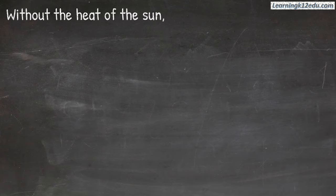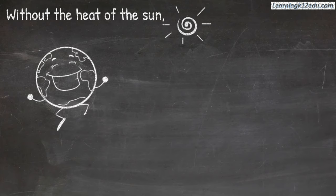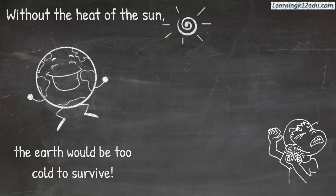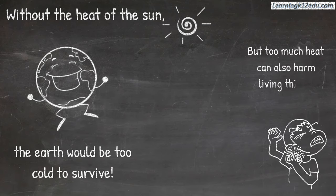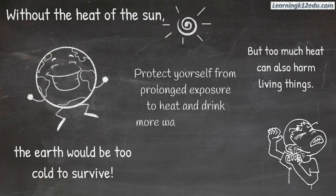Without the heat of the sun, the Earth would be too cold to survive. But too much heat can also harm living things. Protect yourself from prolonged exposure to heat and drink more water when you go in the sun.